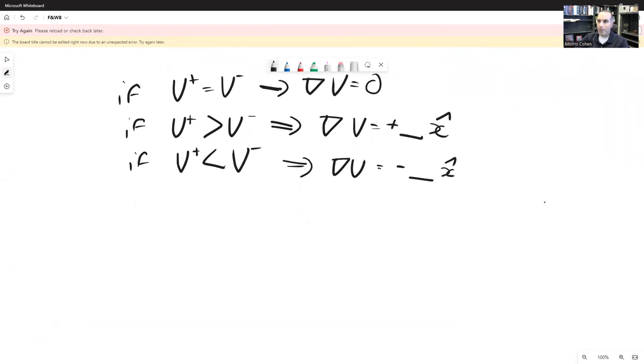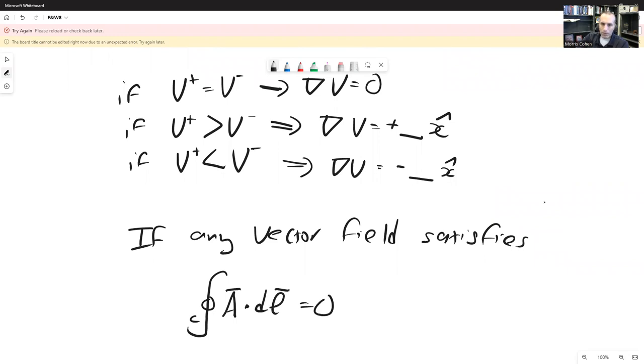All right. Now, one thing that I'm not going to derive mathematically, but you can show this, that if any vector field satisfies this relationship that the path integral around any circular path that returns back to the start of this vector field A along that path equals zero, if that is the case, then there exists a gradient. You can define a gradient. And I'll give a little more context for what this means in a second.